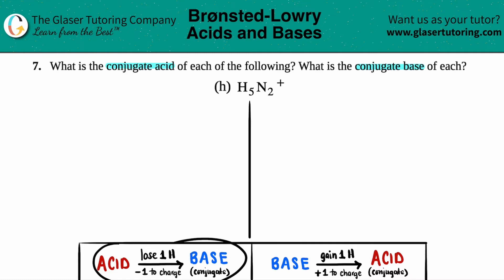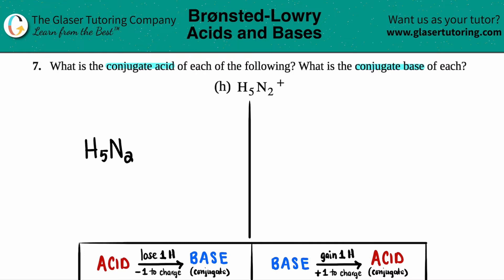I'm going to start over here and treat it as an acid to find the conjugate base first. By the way, conjugate just means what you produce — a conjugate is always going to be on the product side. It's just the other pair you can get from your starting ion. And conjugates are only used in acid-base chemistry.